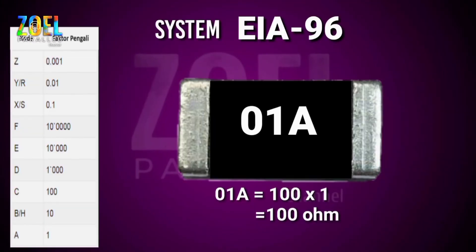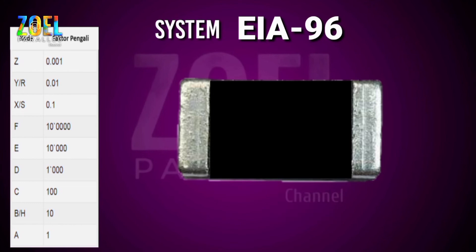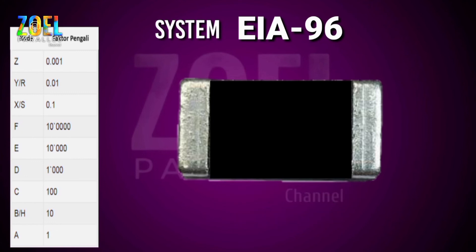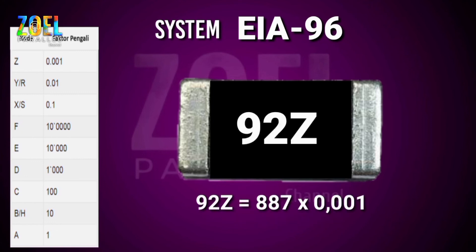Contoh: 01A sama dengan 100 × 10¹ sama dengan 100 ohm. 38C sama dengan 243 × 10² sama dengan 24.300 ohm. 92Z sama dengan 887 × 0,001 sama dengan 0,887 ohm.